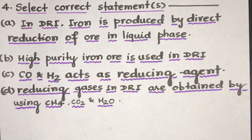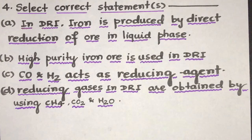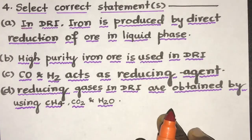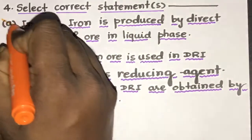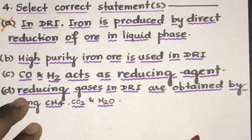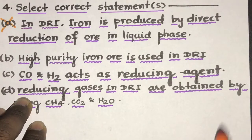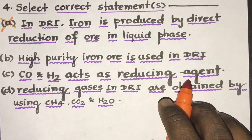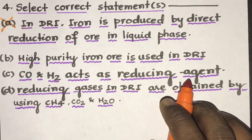Coming to the next. Select correct statements. So we have 4 statements here and we have to select the correct. In DRI, iron is produced by direct reduction of ore in liquid phase. This is incorrect. Absolutely incorrect. Because we know that in DRI, iron is produced by direct reduction of ore in solid phase, not in liquid phase, with the help of reducing agents like carbon, carbon monoxide and hydrogen.